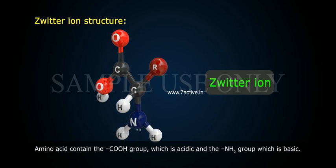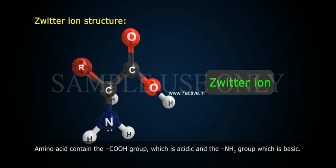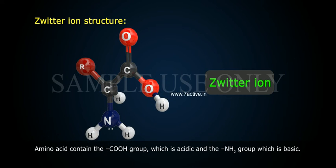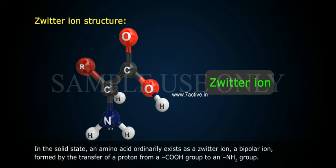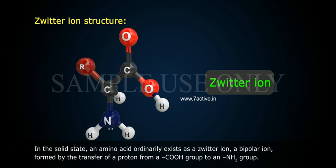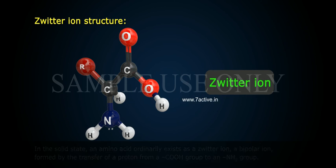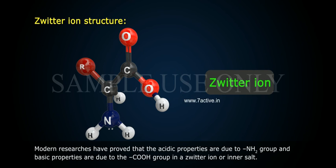Zwitterion structure: An amino acid contains a COOH group, which is acidic, and an NH2 group, which is basic. In the solid state, an amino acid ordinarily exists as a zwitterion — a bipolar ion formed by the transfer of a proton from the COOH group to the NH2 group. Modern researchers have proved that in a zwitterion, or inner salt, the acidic properties are due to the NH3+ group and the basic properties are due to the COO- group.